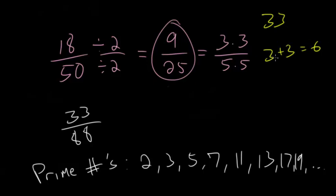So for 33, you add 3 and 3, which is equal to 6. And if the sum of those digits is a number that's divisible by 3, and in this case it is, then the original number is divisible by 3. 33 divided by 3 is just 11.